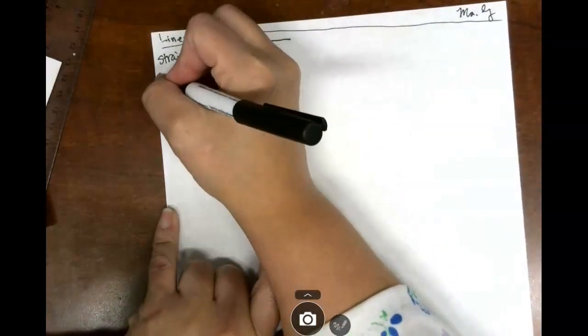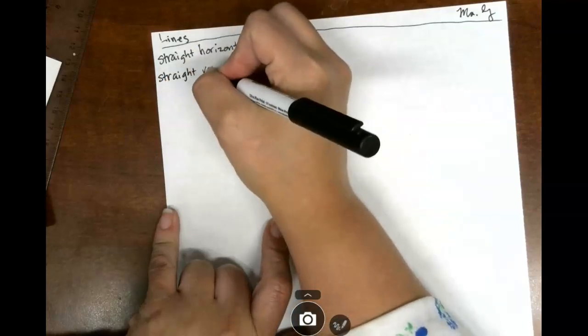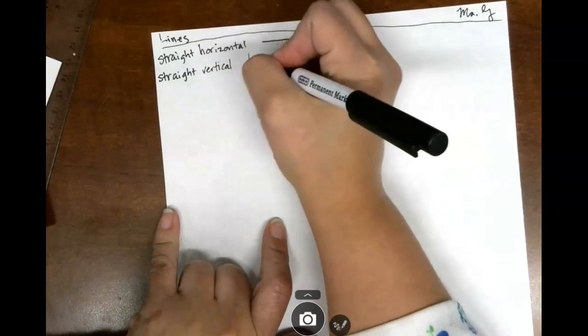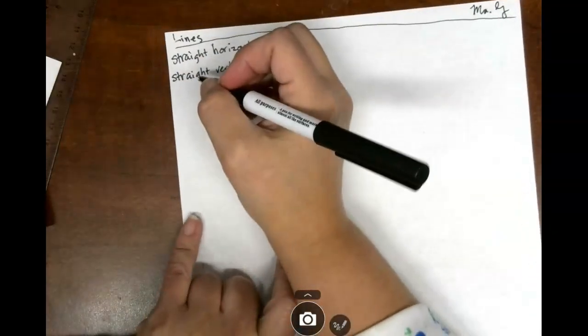Next we have straight, S-T-R-A-I-G-H-T, vertical, V-E-R-T-I-C-A-L. And this is our lines that go up and down like trees.